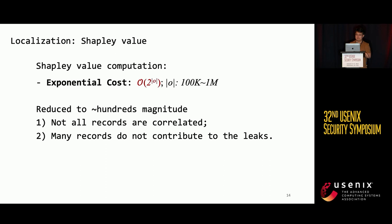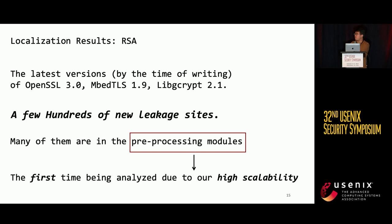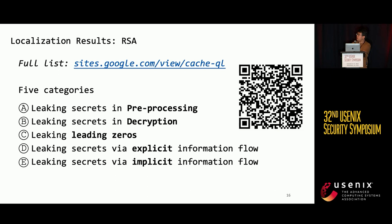We use our tool to localize the vulnerable program points in different crypto software and found a few hundred new leakage sites. Many of them are in the preprocessing modules — this is the first time these modules have been comprehensively studied, as previous tools were unable to analyze the whole process of this software due to their limited scalability. We provide a full list of our findings at our website, accessible via QR code. We categorize the localized leakage sites into five categories.